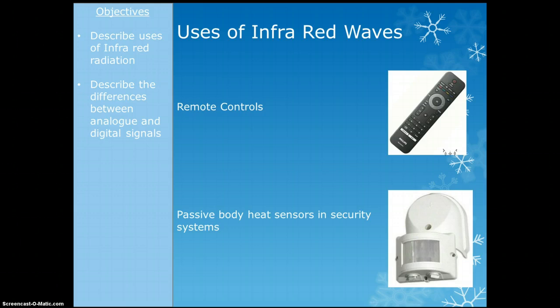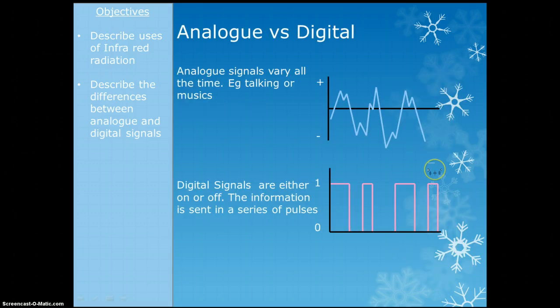Infrared waves are also used as passive heat sensors, which means they detect the infrared waves that are given off. Infrared is basically just heat, and passive heat sensors detect heat from people going past. It's a way of detecting if there are people somewhere, because you suddenly detect a big spike of heat — being warm-blooded creatures, we give off heat, which is infrared.